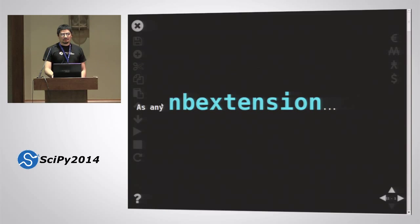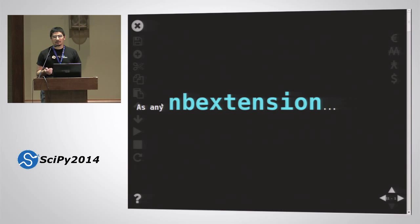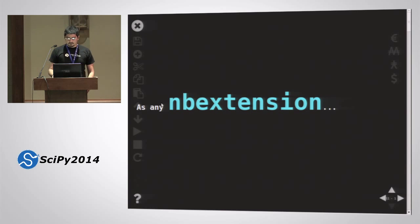Installation: you can install it as any NB extension. If you don't have experience with that, I can help you — it's really easy. We provide an API to do it, but you can also do it manually by creating an NB extension folder in your IPython profile and in your custom JS linking to the extension in that folder. It's very simple.